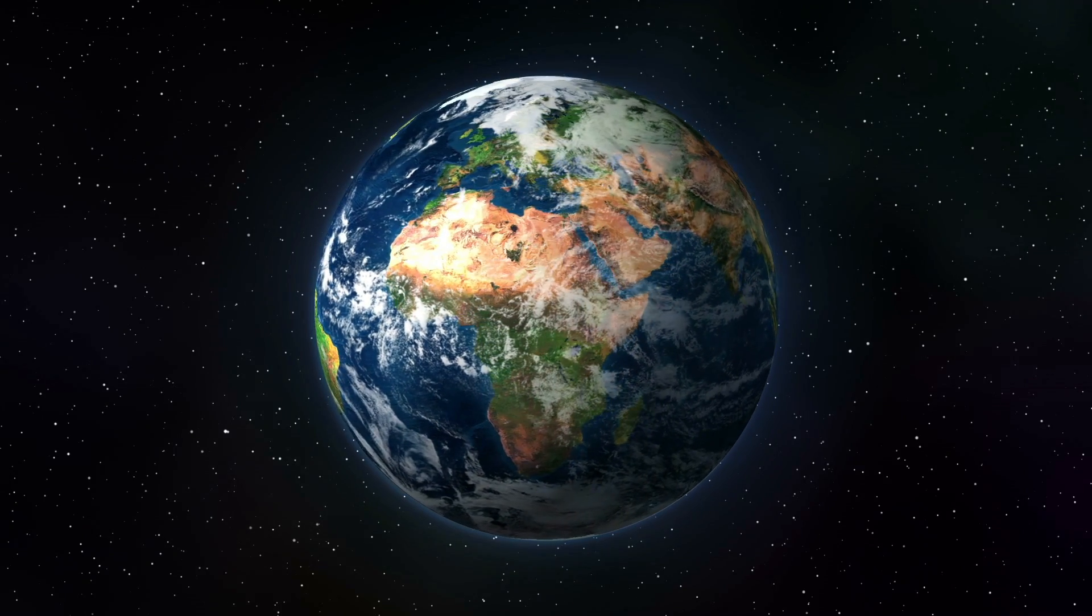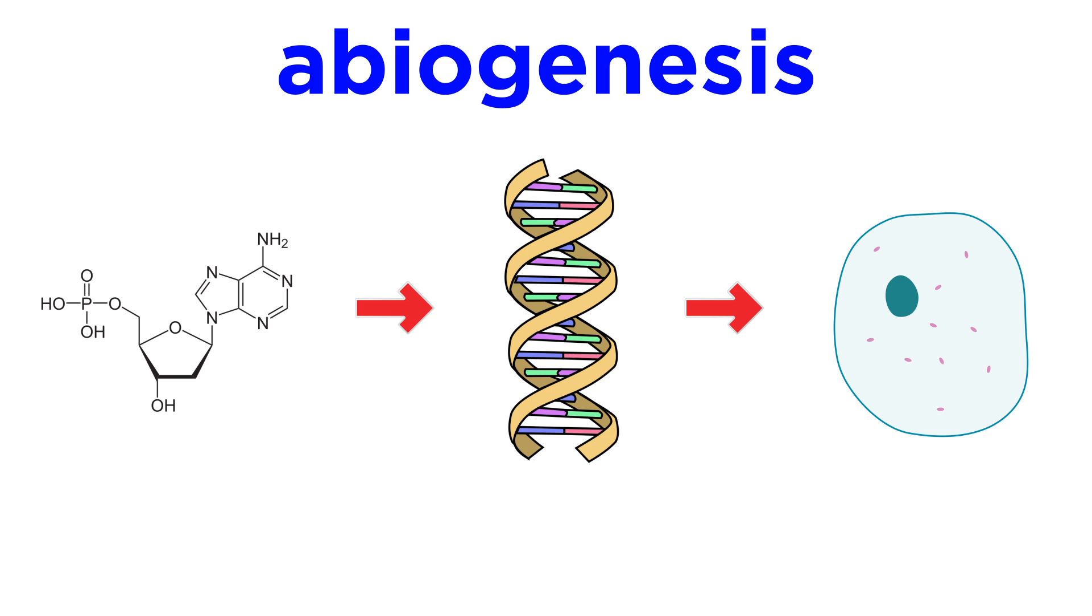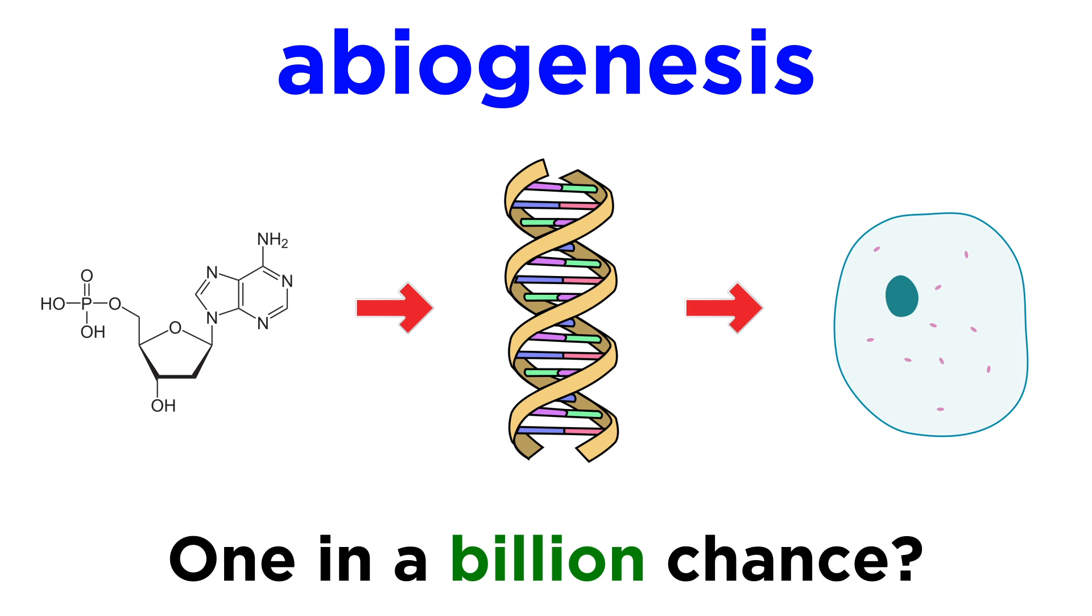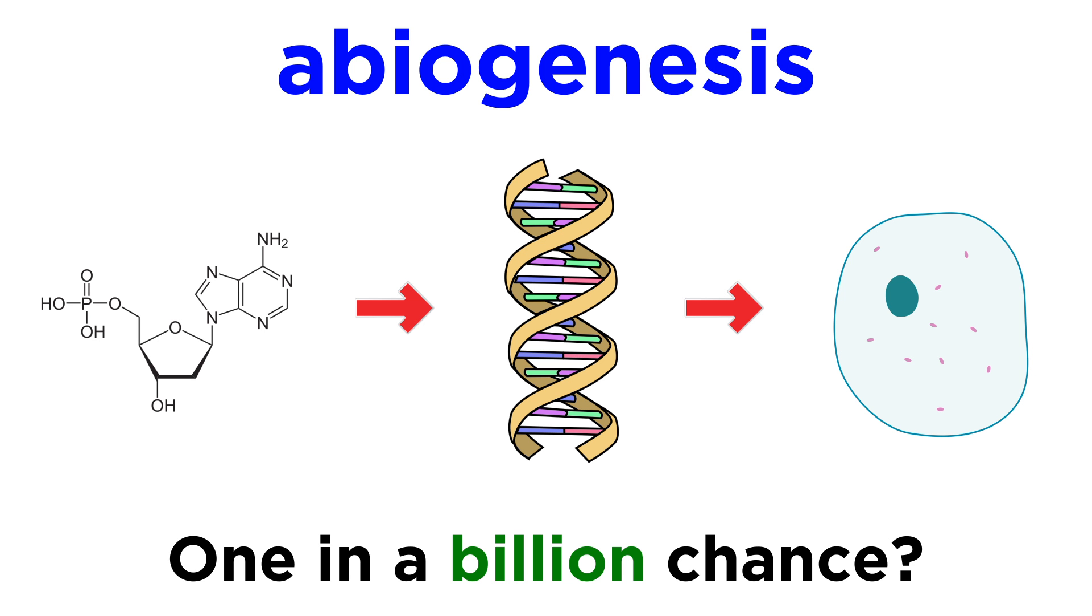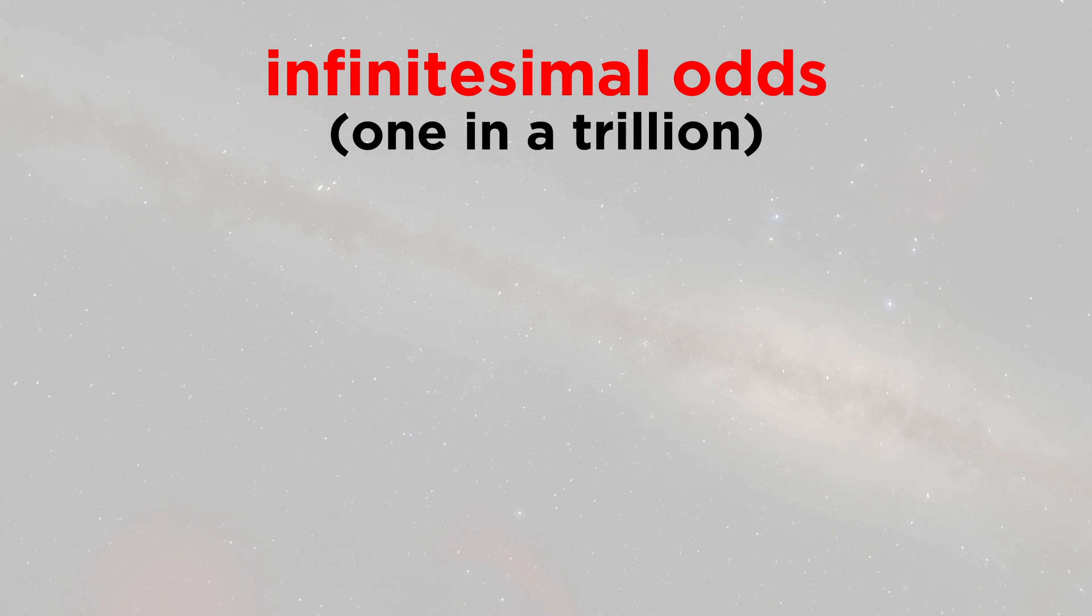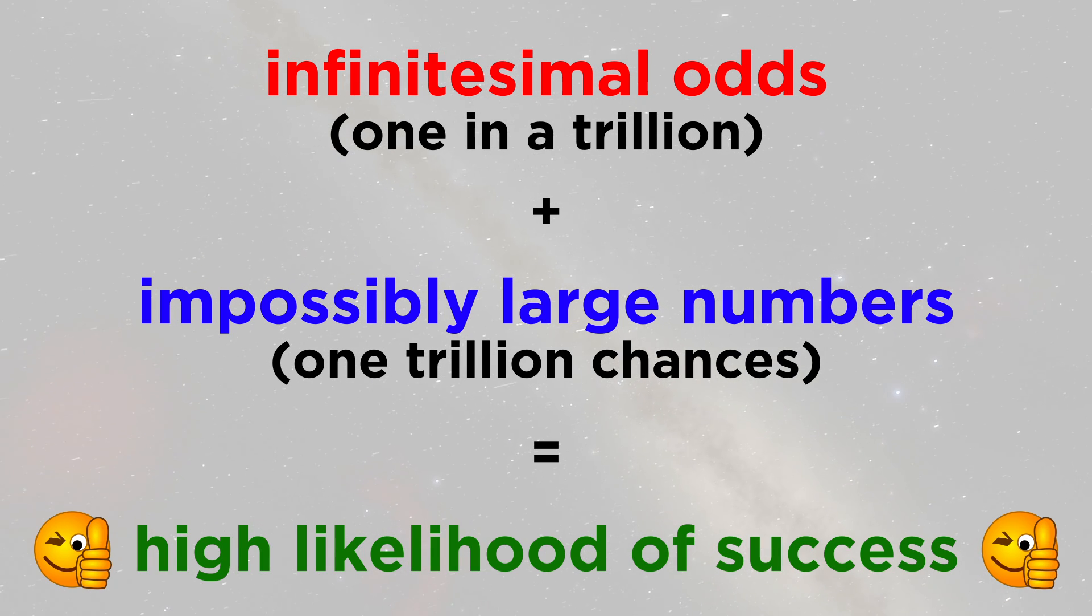We know of one place for sure that intelligent life developed, that's here on Earth. But is there life anywhere else? No matter how unlikely you think abiogenesis is, which is life being generated spontaneously from nonliving matter, even if you think it's a one in a billion shot, there are billions of worlds in our galaxy alone, and when you combine infinitesimal odds with impossibly large numbers, you get near certain probabilities for even the unlikeliest of things. In a nearly endless universe, there are nearly endless worlds, and it would be hard to believe that we are really the only ones.